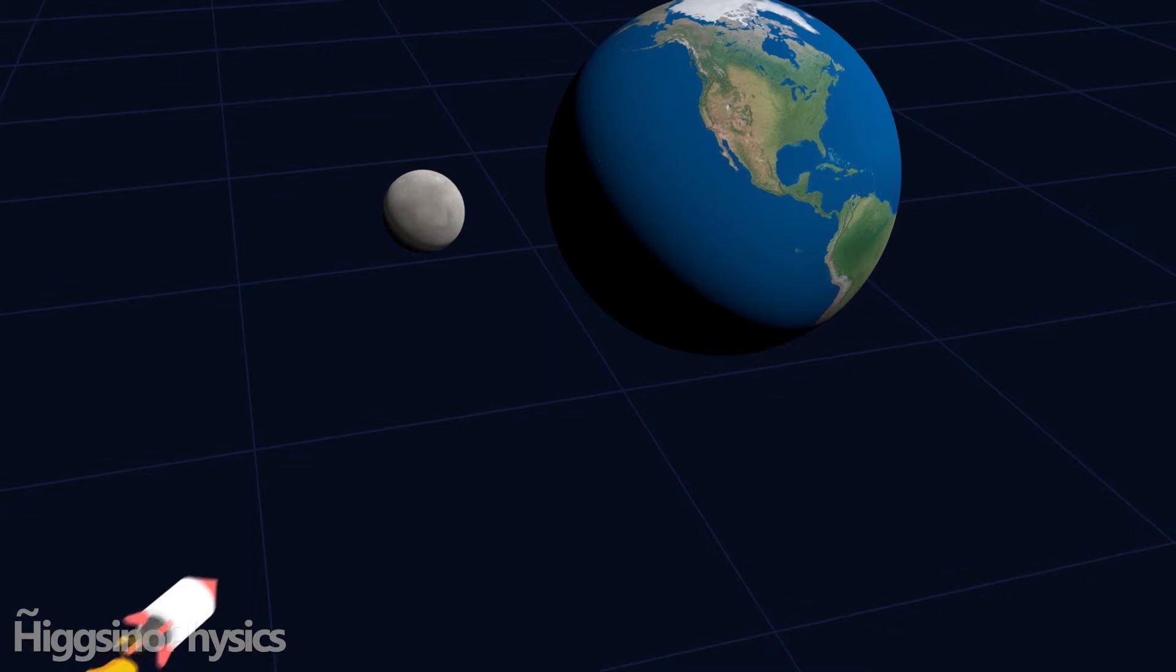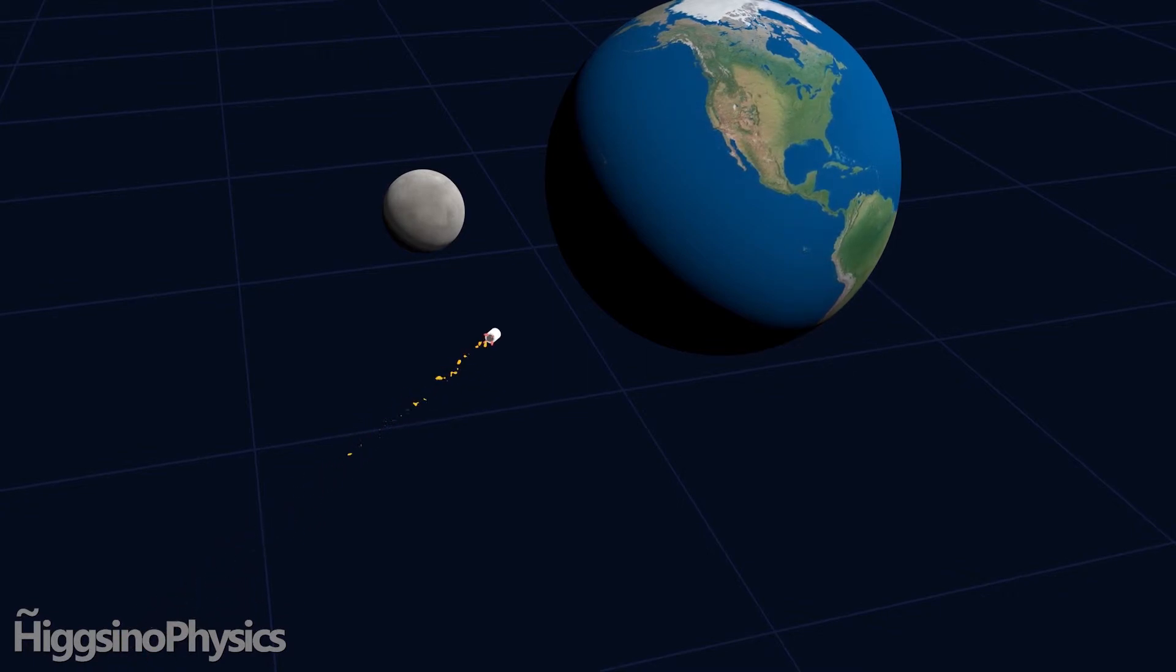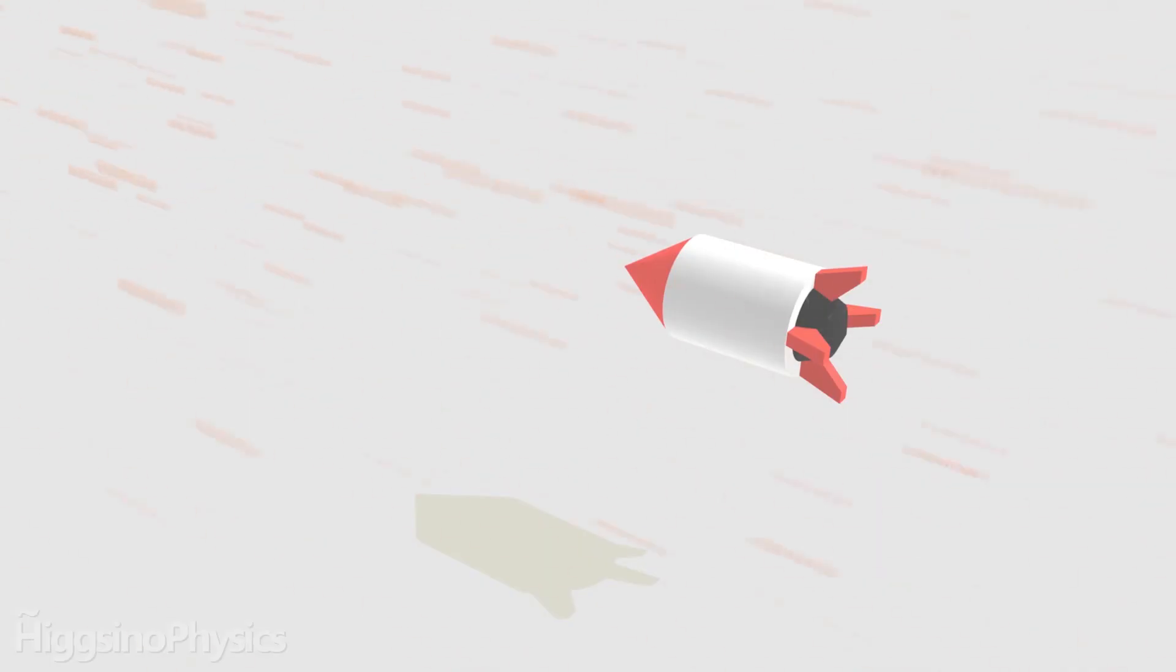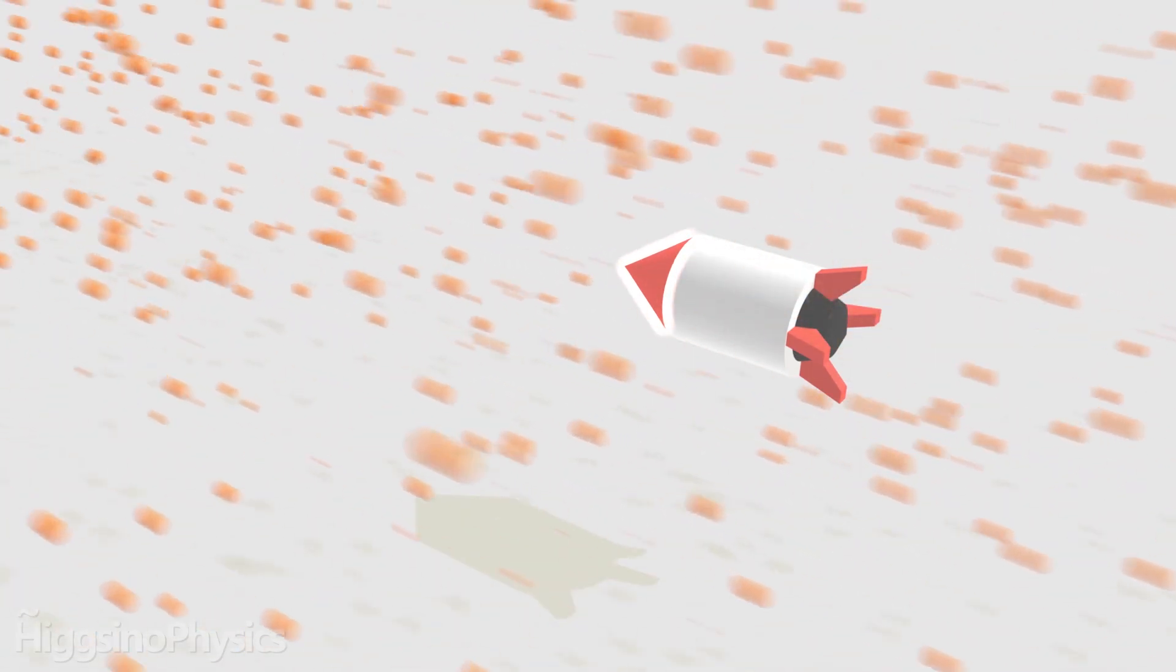When re-entering Earth, the spaceship is flying extremely fast. We're talking in the scale of kilometers per second. The rocket can't brake before there is relatively dense air, so it would be braked in dense air at tremendous speed. And all the kinetic energy is being converted into heat, and there's a lot of it.